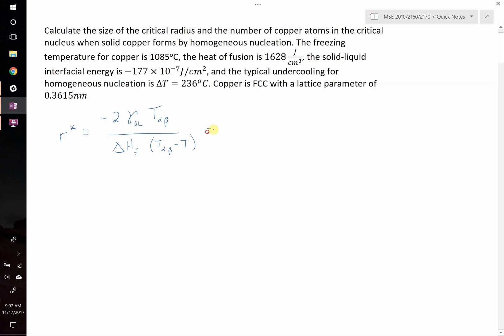So let's start plugging in values here. Negative 2 multiplied by negative 177 times 10 to the negative 7, that's in joules per centimeter squared. Multiply this by the temperature, we need to do 1085, and then add 273 to turn that into Kelvin. We take this whole thing, we're going to divide it by the heat of fusion, which is 1628 joules per centimeter cubed. And then multiply this by the difference in temperature, and we know that we are 236 degrees below the melting temperature, so T alpha beta minus T is just going to be equal to 236.